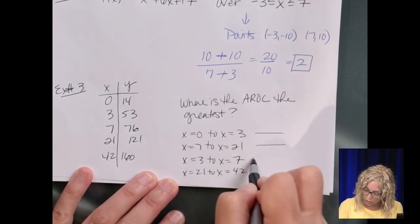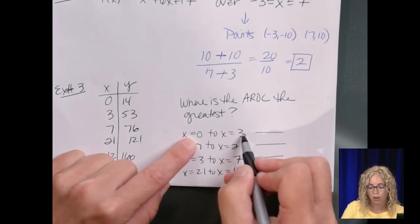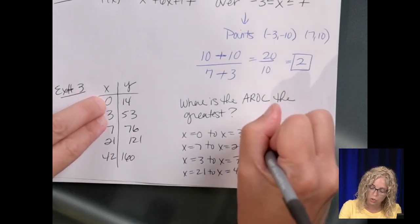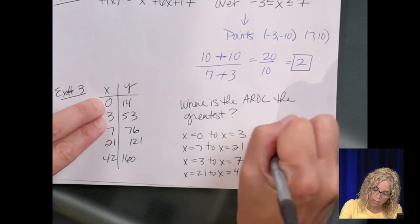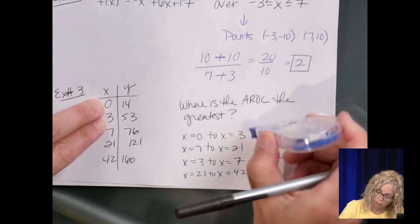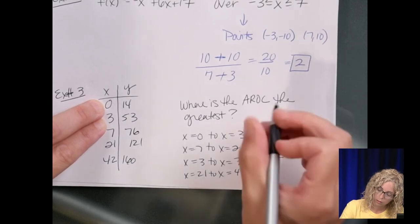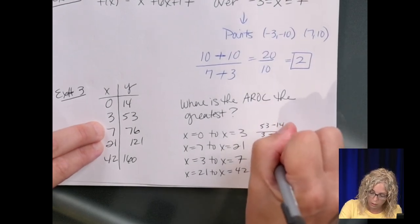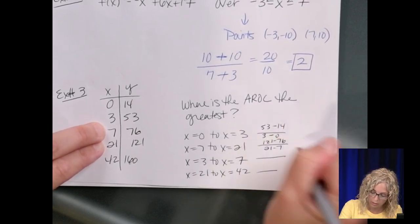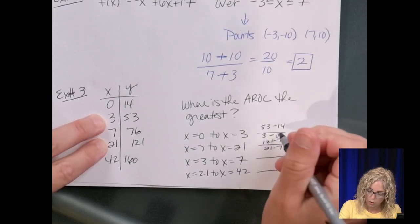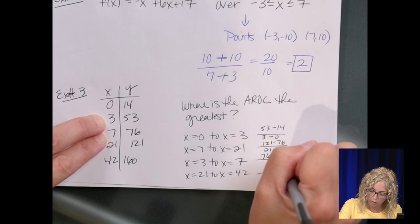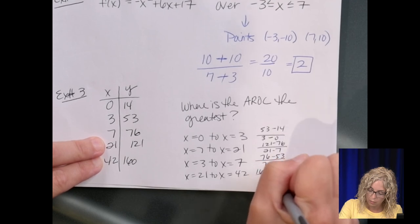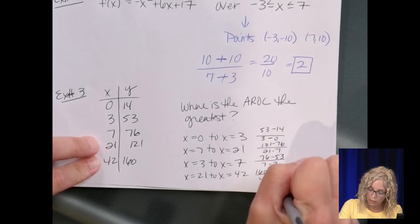So, draw your fraction bars for each one. From 3 to 0, we know what the x values are, we can subtract. So, 3 to 0 is here, so we subtract the 53 minus 14, 3 minus 0. 7 to 21, so it's 121 minus 76, 21 minus 7. 3 to 7, so it would be 76 minus 53, over 7 minus 3, and then last, 21 to 42 would be 160 minus 121, over 42 minus 21.